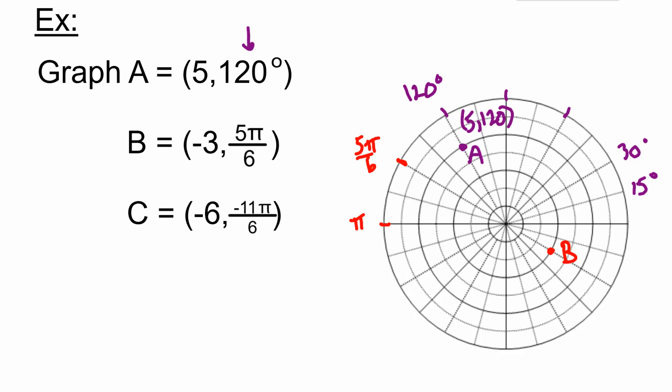Point C we'll do in green. We go to -11π/6. 11π/6 would be right here, but that's positive 11π/6 when we go counterclockwise. Instead, we go around the circle clockwise. That gets us to right here. Instead of 30 degrees, we call it -11π/6.